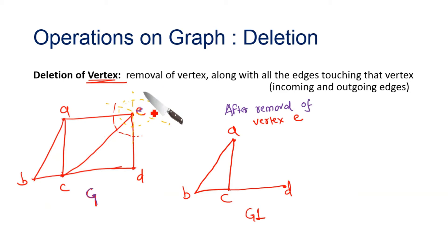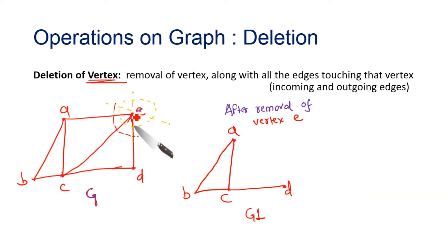If you want to remove a vertex, simply removing the vertex name is not enough. The vertex will still be considered present if you don't also remove the edges incident on it. So when removing a vertex, you must also remove all edges touching that vertex — all incoming and outgoing edges. For example, removing this vertex also removes its name and all three incident edges, giving us the result of vertex deletion.